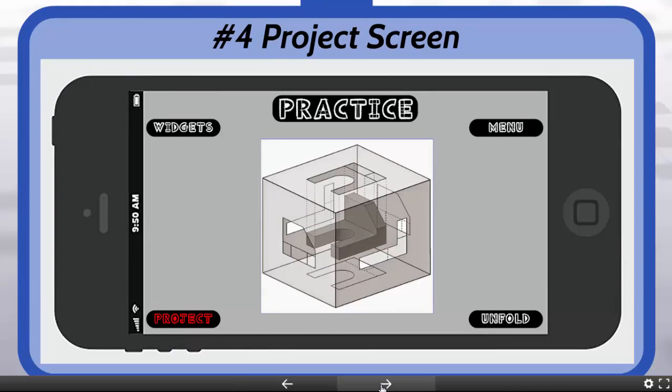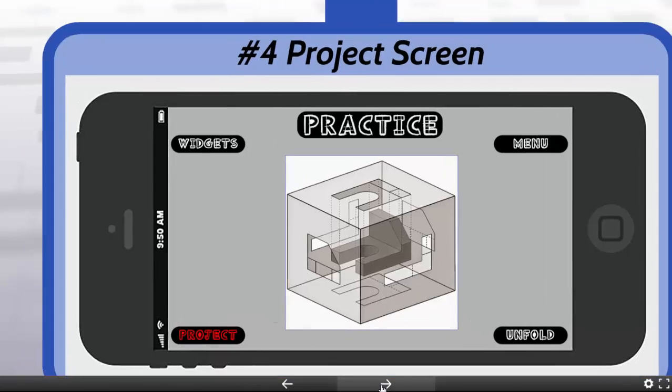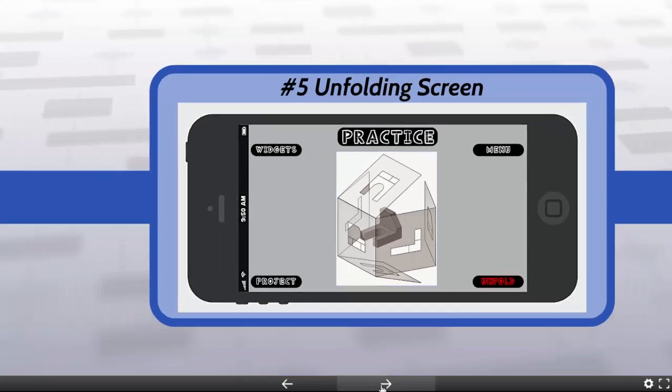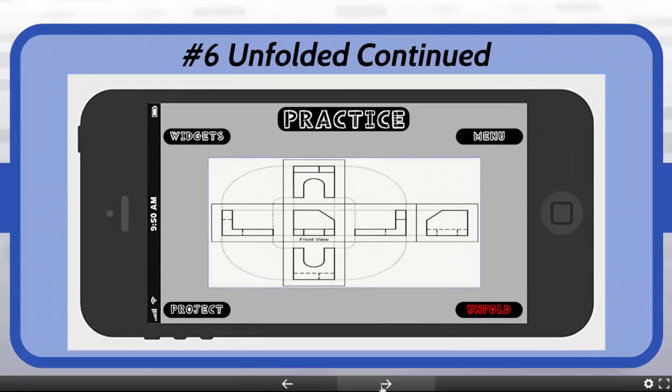If they click the project button, it will project the different views of that object onto the glass box. If they click unfold, the box will begin to unfold and the student will then be able to see the different views of that widget.